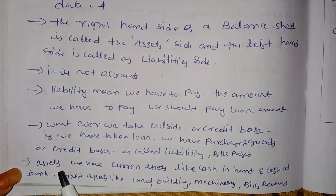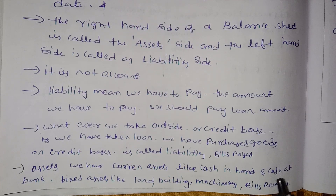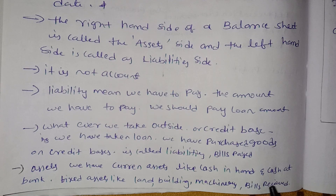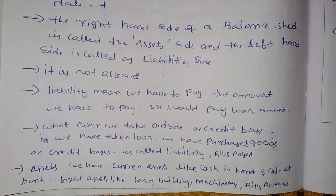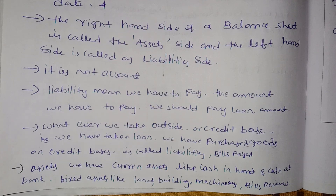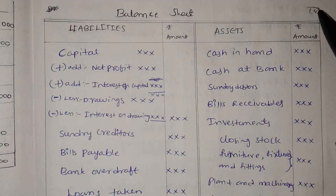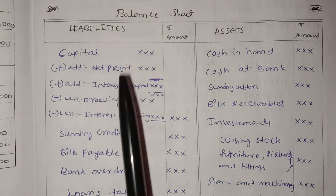Assets: we have current assets like cash in hand, cash at bank. Fixed assets are land, building, and machinery. Bills receivable are also assets. From previous videos, we covered the credit and profit and loss account; here we have liabilities and assets.